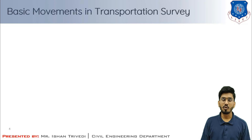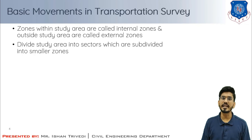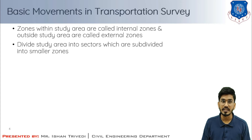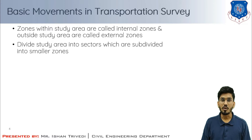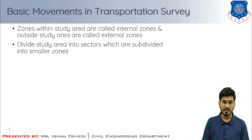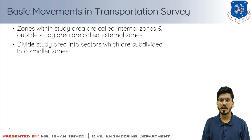Now let us understand the basic movements in the transportation survey. Based on zoning, the purpose of zoning is to facilitate the spatial quantification of land use and the economic factors which influence travel patterns. Data collected on an individual household basis cannot be conveniently analyzed unless aggregated into smaller zones which reflect the average characteristics of individual households. Zoning also helps in geographically associating the origins and destinations of travel. Zones within the study area are called internal zones.